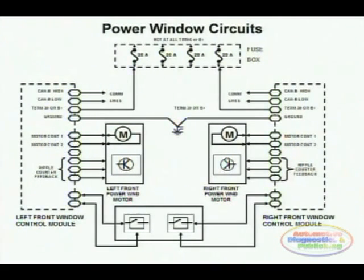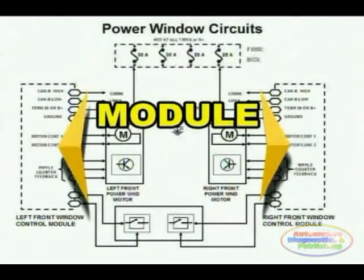In this particular circuit we see how the window control module, which is a small computer that is in charge of running all the functions of the power window, is the one controlling the power window motor.